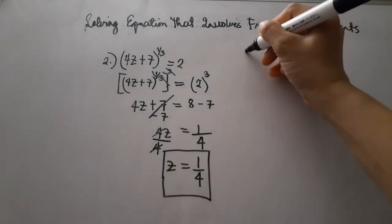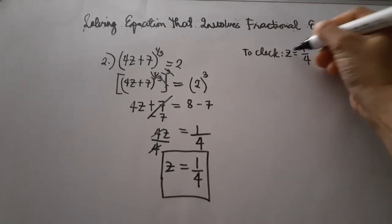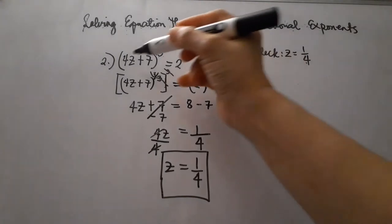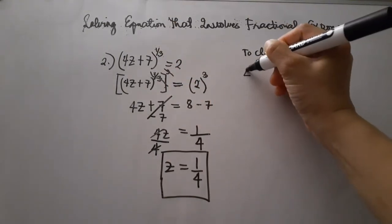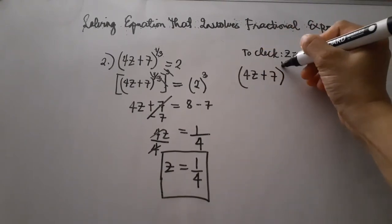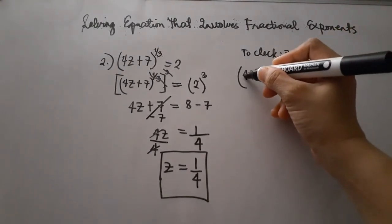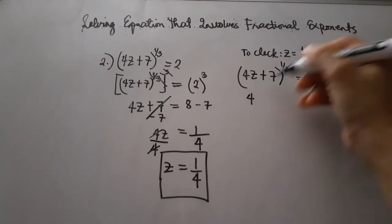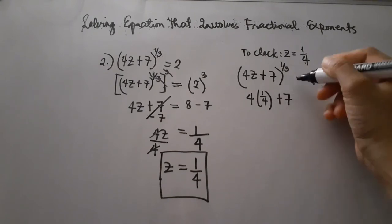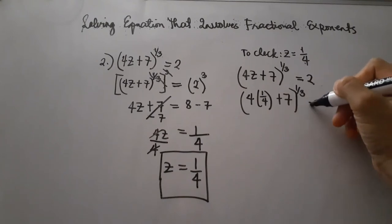To check the value of z, we substitute z equals 1 fourth back into the original equation. We use the given equation: 4z plus 7, raised to the power of 1 third, is equal to 2. We substitute z equals 1 fourth: 4 times 1 fourth, plus 7, raised to the power of 1 third, equals 2.